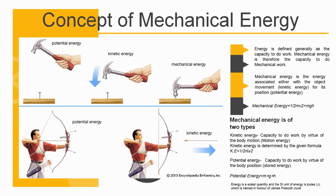The concept of mechanical energy. Mechanical energy is defined generally as capacity to do work. Mechanical energy is therefore the capacity to do mechanical work. The amount of energy transferred to the object is equal to the work done. Work is said to be done when an object is moved against a force like gravity.